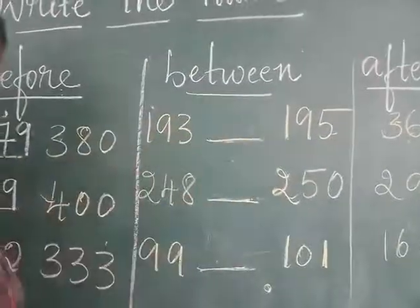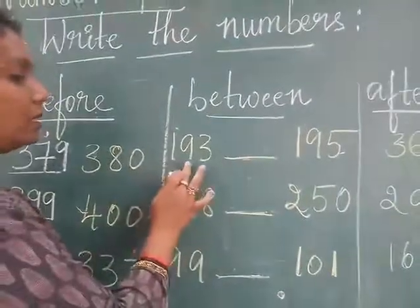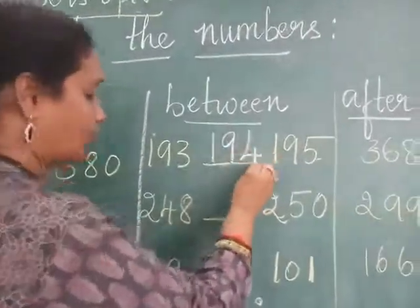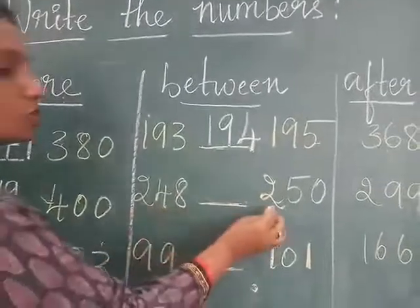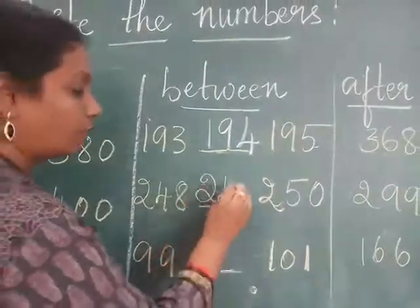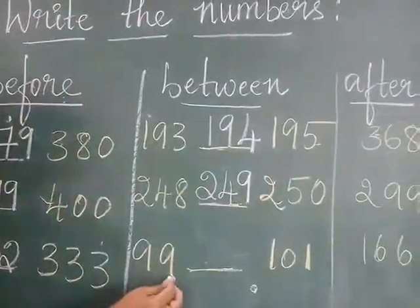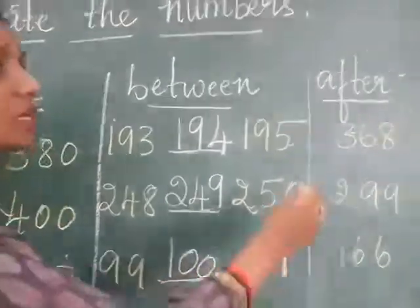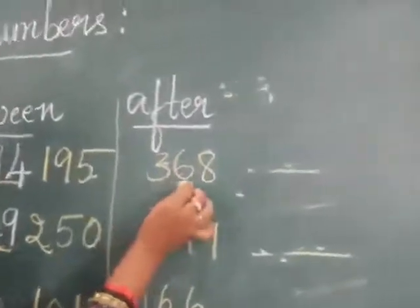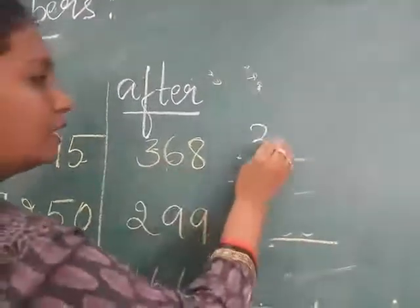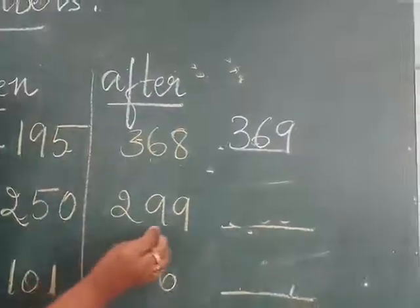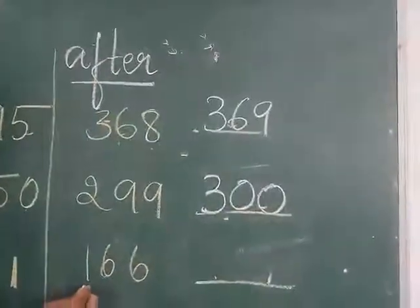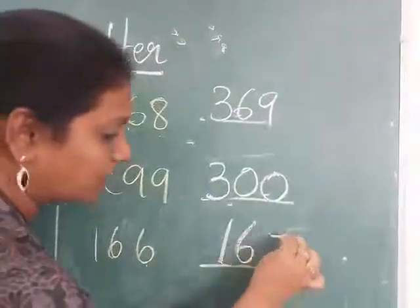Here, between. Between number is a middle number. 193, 195 — what will come between? 194. 248, 250 — between is 249. 99, 101 — between is 100. Here is the after number: 368 — after that, 369. 299 — after that, 300. 166 — after that, 167.